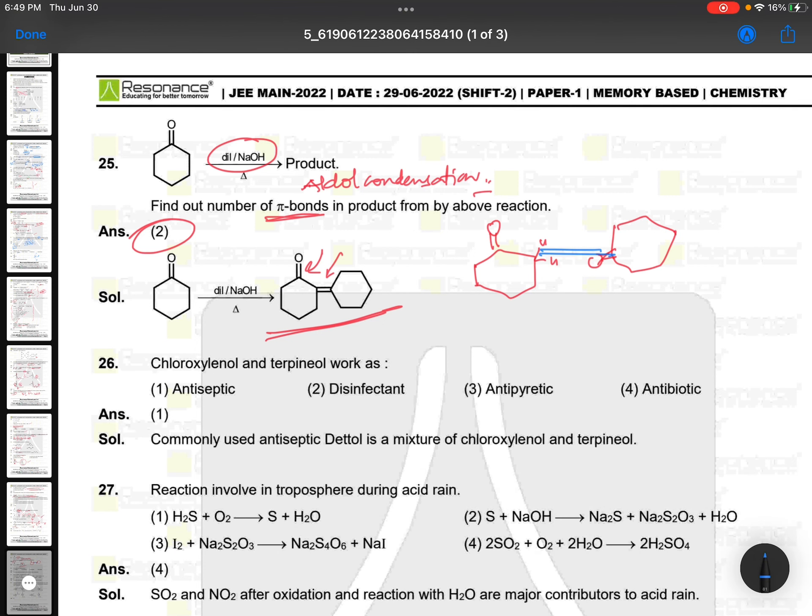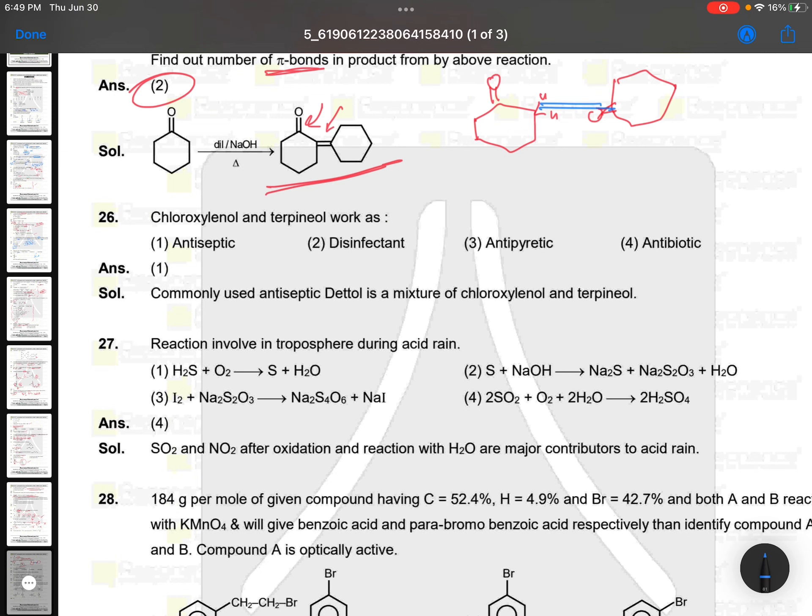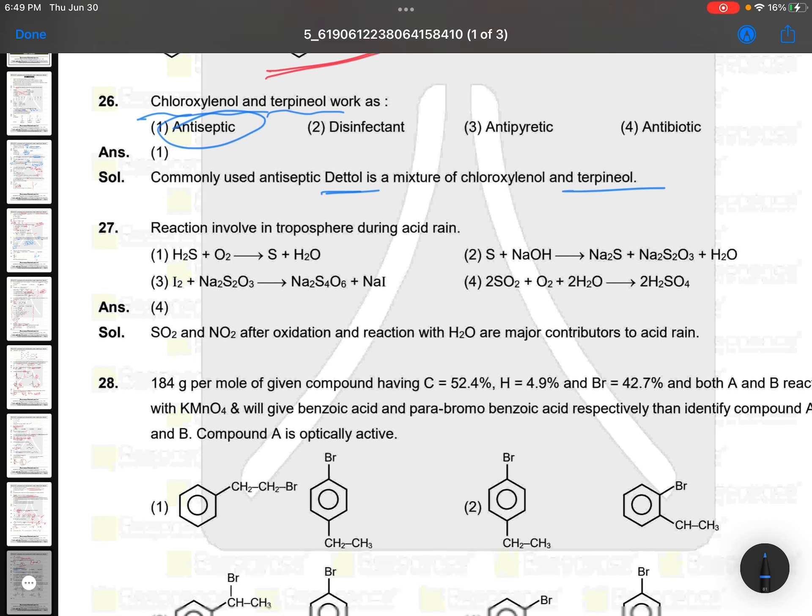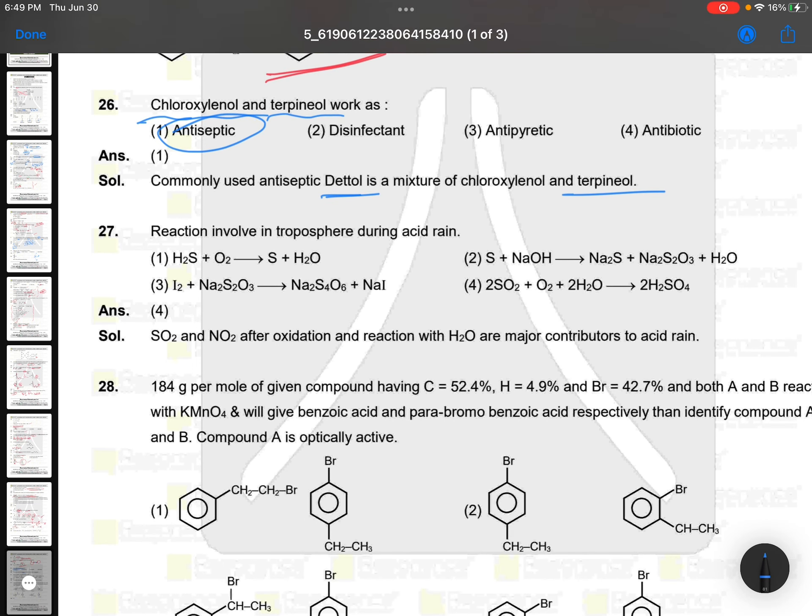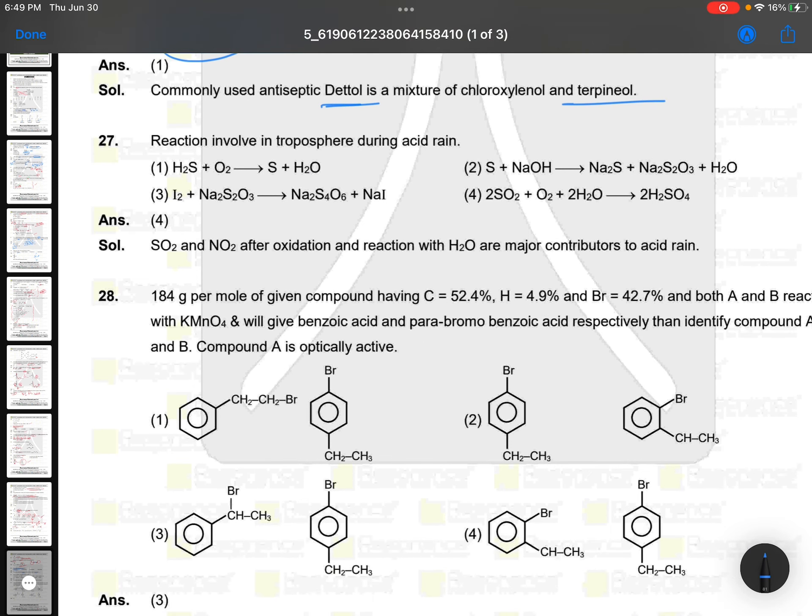Chloroxylenol and terpene oil. This is second time question in JEE series. This is antiseptic, Dettol. That question was earlier: question was one is terpene oil, second is chloroxylenol like that. Question is there: reaction involving troposphere during the acid rain. Acid rain means acid should form. Very easy question.